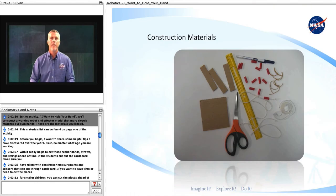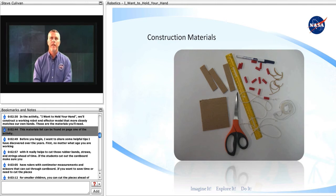In the activity, I want to hold your hand, we'll construct a working robot end effector model that more closely matches our own hands. These are the materials you'll need. This materials list can be found on page one of the activity.